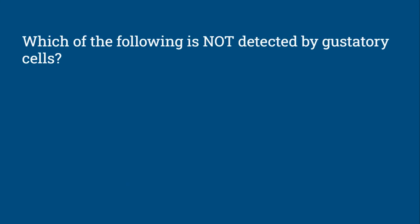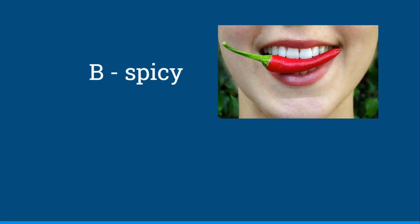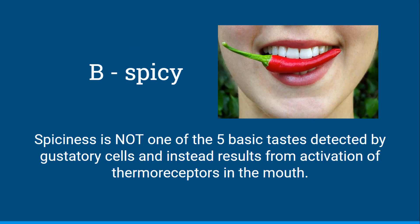Which of the following is not detected by gustatory cells? Bitter, spicy, umami, sweet, or sour. The answer is B, spicy. Spiciness is not one of the five basic tastes detected by gustatory cells, and instead results from activation of thermoreceptors in the mouth, which detect temperature.